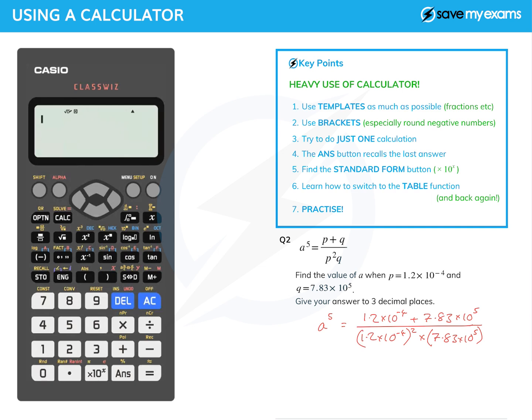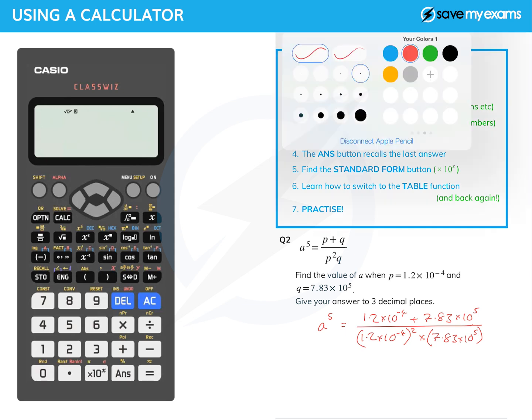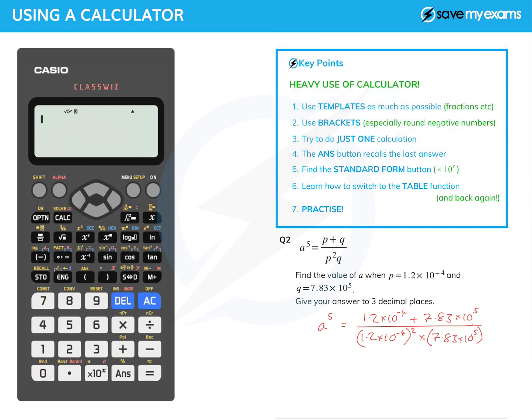Then I want to find the fifth root of all of that. If I do that on the left hand side, that will just give me a. I'm now going to type in all of this in one go into my calculator. You might be tempted to do it in several goes, but it is actually easier to do it in one go.